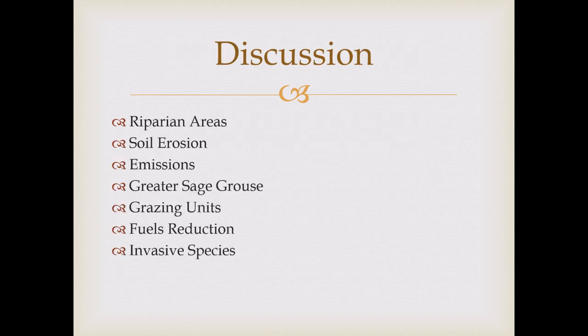Some points I'm going to be covering here are riparian areas, soil erosion, emissions, greater sage-grouse, grazing units and how we measure them, fuels reduction, and invasive species in the areas.